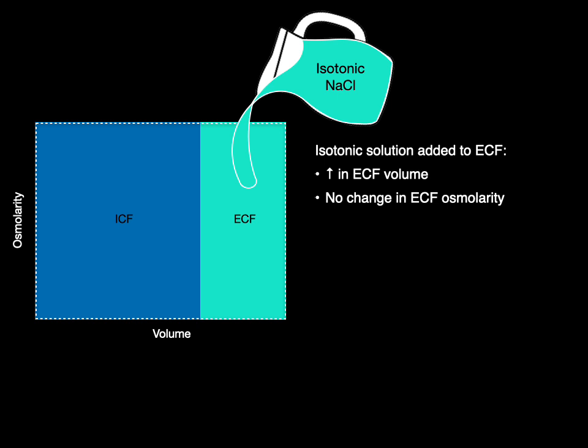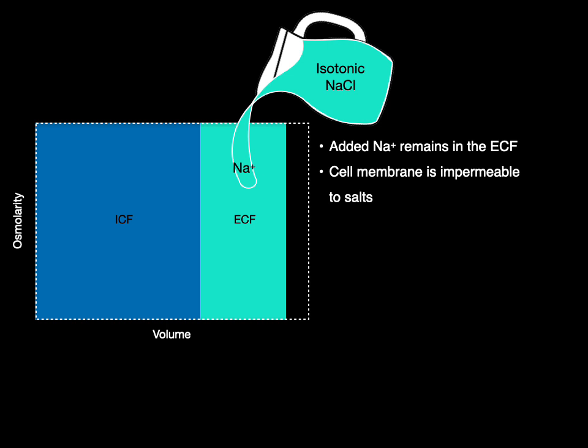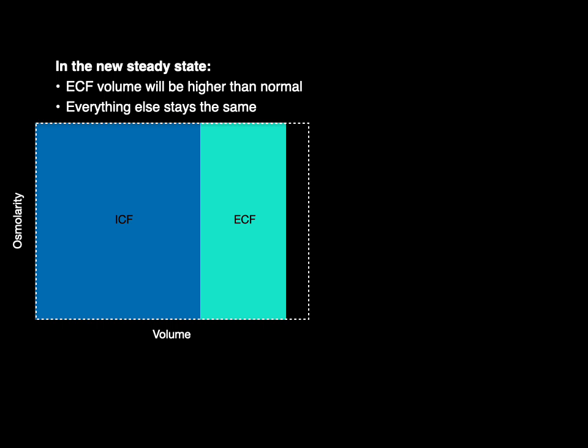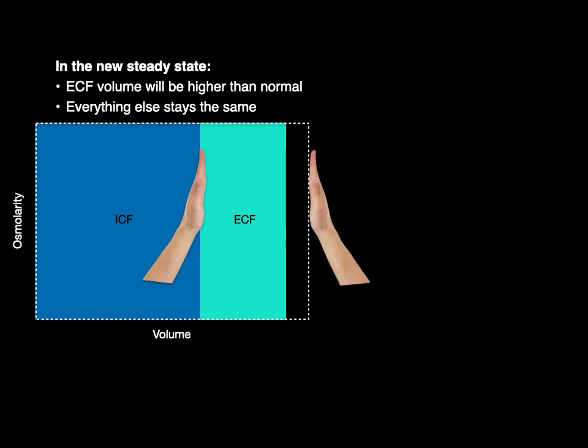When we add the isotonic solution to the extracellular fluid, there's an increase of extracellular fluid volume but no change in osmolarity — notice that the vertical line does not change. The sodium added remains in the extracellular fluid compartment because the cell membrane is impermeable to salts. As a result, there's no shift of water between intra- and extracellular fluid because there's no difference in osmolarity between the two compartments. In the new steady state, extracellular fluid volume would be higher than normal; everything else stays the same.